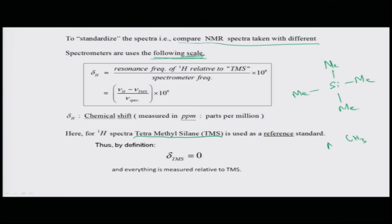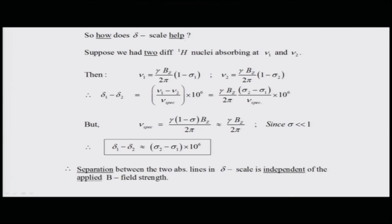TMS — tetramethylsilane, Si(CH₃)₄ — is used as a reference standard; it has a very low magnetic field effect because silicon has very low electron-withdrawing character. The chemical shift δ is defined as the resonance frequency of a proton relative to TMS divided by the spectrometer frequency, multiplied by 10⁶ (in parts per million). By definition, TMS is assigned δ = 0, and everything else is measured relative to it.